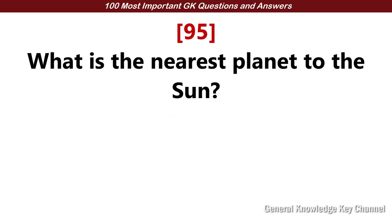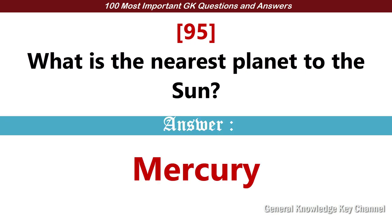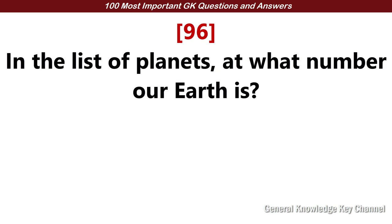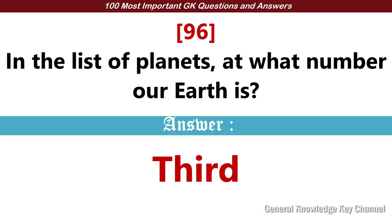What is the nearest planet to the sun? Answer: Mercury. In the list of planets, at what number is our Earth? Answer: 3.